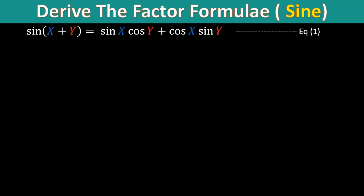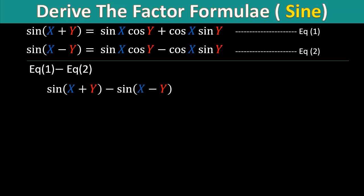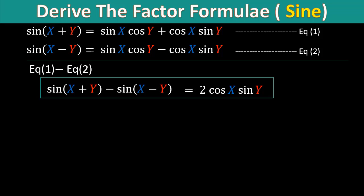We proceed to our second Factor Formula for sine. We use the same addition formulas, but this time we subtract equation 2 from equation 1. We will have sine of (x+y) minus sine of (x−y) on the left-hand side, and on the right-hand side we will have 2 cosine x multiplied by sine y.